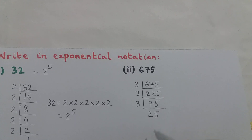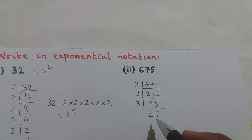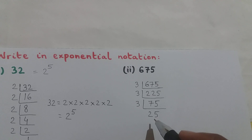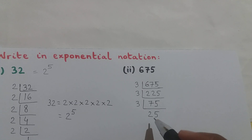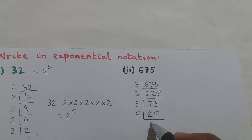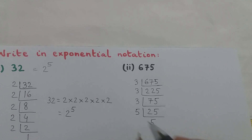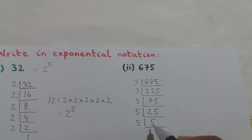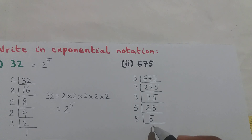Now is 25 divisible by 3? 2 + 5 = 7, and 7 is not divisible by 3. So 25 is not divisible by 3. The next prime number after 3 is 5, and 25 is divisible by 5. So I will divide 25 by 5 — 25 divided by 5 is 5. And 5 is again divisible by 5, so 5 divided by 5 is 1. It has become 1, so we stop the process here.